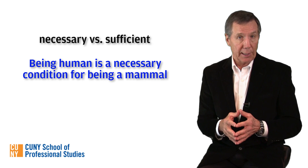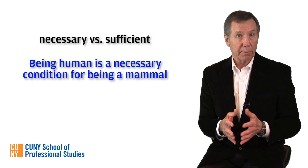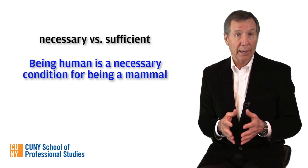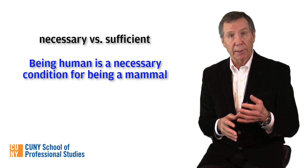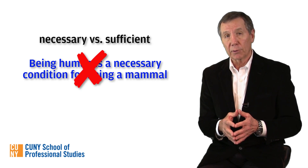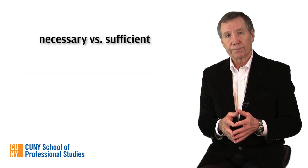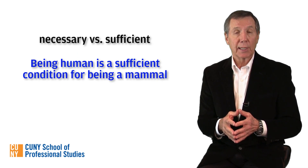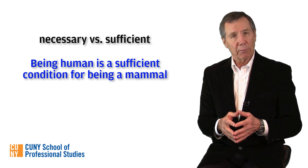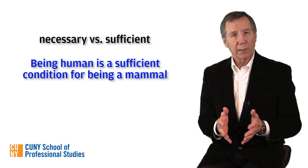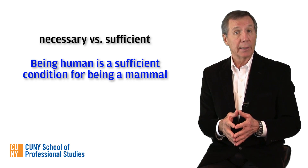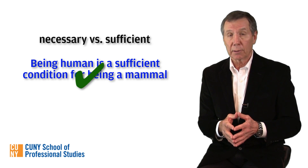Being human is a necessary condition for being a mammal. Well, that would mean that you must be a human in order to be a mammal — and that, too, is clearly false. But how about this? Being human is a sufficient condition for being a mammal. That would mean that being human, all by itself, would place me in the mammalian species. And that is clearly true.